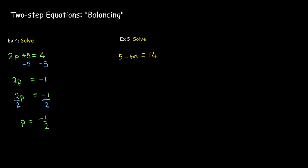In the next example, 5 minus m equals 14. Be careful — the minus sign goes with the m, so think of this as positive 5 and negative m. When I subtract 5 from both sides, I'm left with negative m on the left-hand side. To get to m, think of negative m as negative 1 times m, and divide both sides by negative 1, giving m equals negative 9. Alternatively, you can think of it as: the opposite of m is 9, so m must be negative 9.